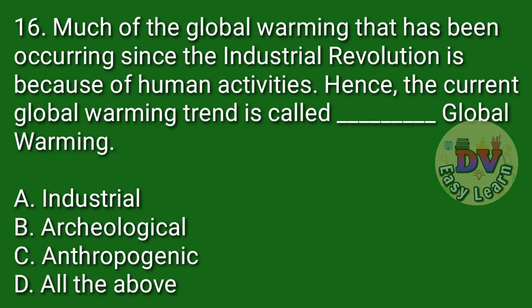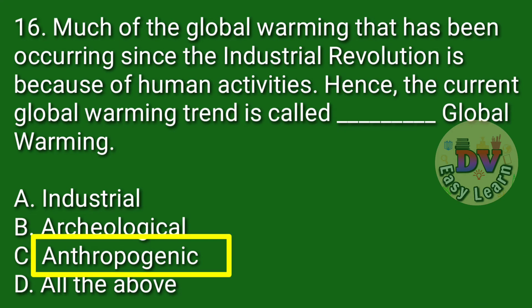Question number 16. Much of the global warming that has been occurring since the industrial revolution is because of human activities. Hence, the current global warming trend is called — Correct answer: Anthropogenic global warming.